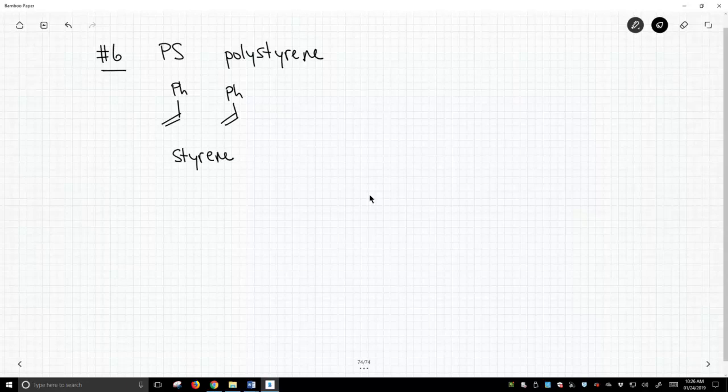Anytime we start with alkenes, you know we're going to do an addition reaction, so this is an addition polymer, and we get this as our repeating unit.